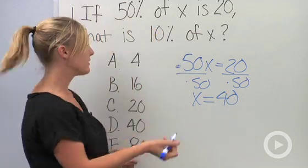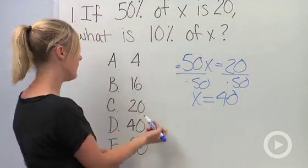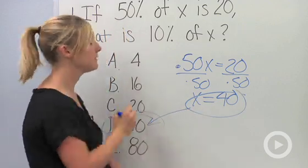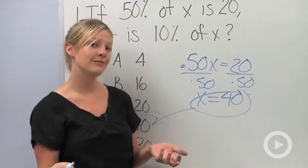Well, we check out our answer choices. We have 4, 16, 20, 40, and 80. X is equal to 40. Perfect. We've got our answer, right? Wrong.